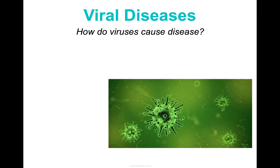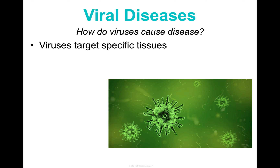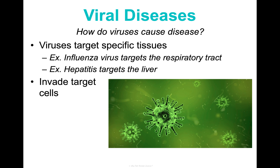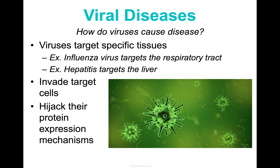Do viruses cause disease? There's a video in the show notes about how the flu virus specifically invades our body — you should check it out. Viruses will target specific tissues. Bacteria are way less tissue-specific, whereas viruses are very specific. For example, the influenza virus specifically targets tissues in your respiratory tract, or hepatitis targets the liver. Viruses invade these specific target cells, hijack their protein expression mechanisms so that the viral DNA or RNA is replicated, transcribed, and translated, making it possible for the virus to copy and spread itself throughout an organism. And that is our brief overview of disease.